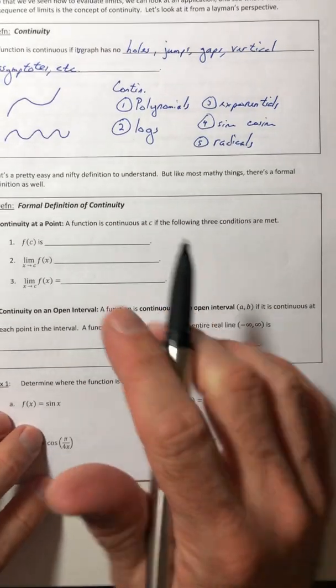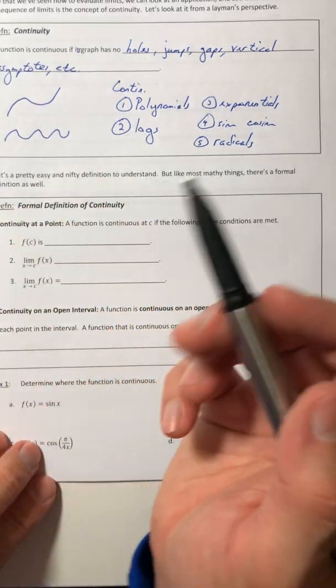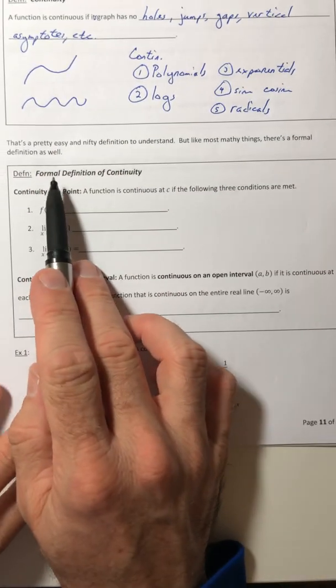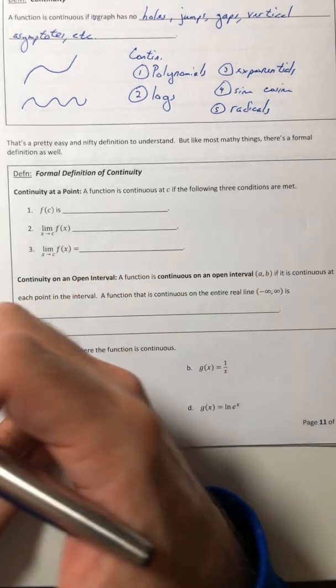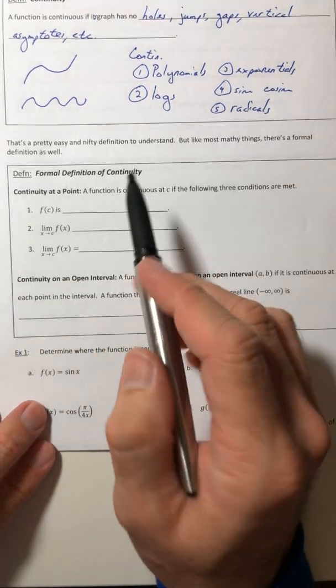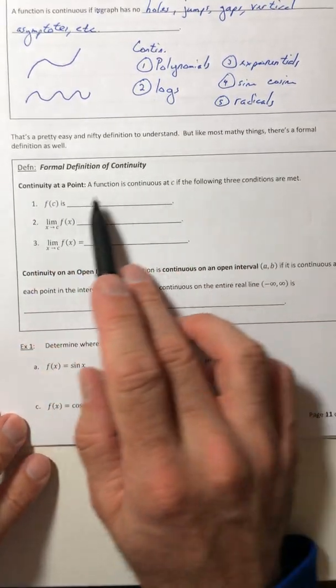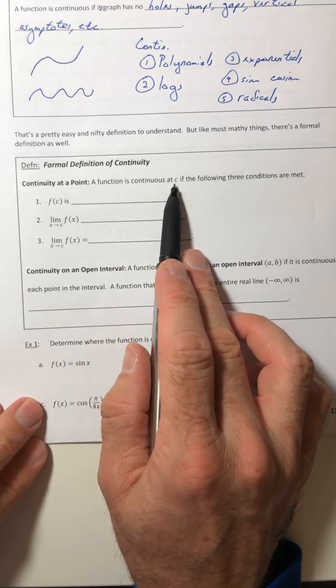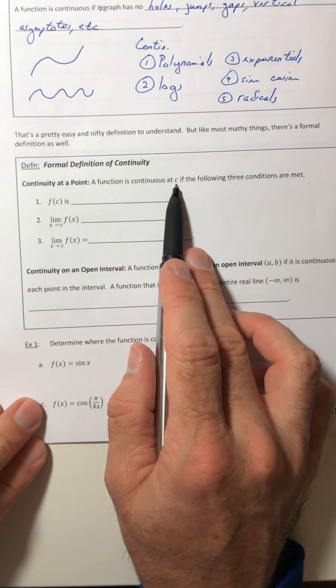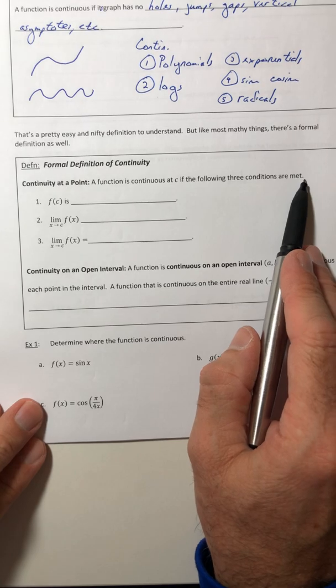Okay, so that's a pretty easy definition to understand. Let's look at the formal definition to give us some more mathematical background. So continuity at a point. A function is continuous at C, this is x equals C, if the following three conditions are met.